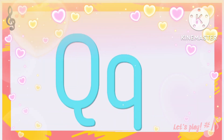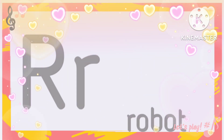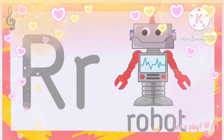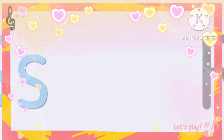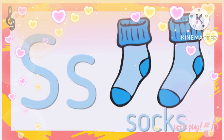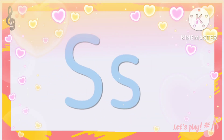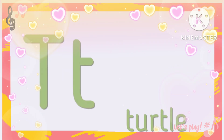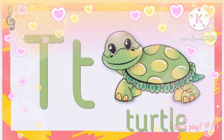U for grill, R for robot, S for socks, T for twirl.